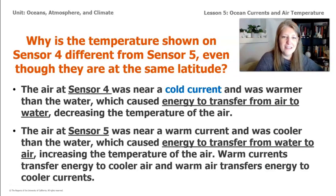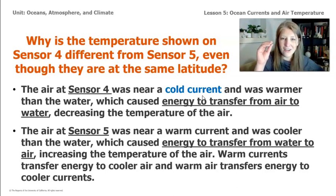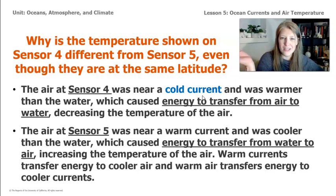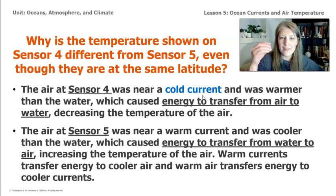In conclusion: because sensor 4 is near that cold current, energy transfers from the air to the water — the warmer air loses energy to the cold current, so the air temperature at that location is actually colder. Sensor 5 is near a warm ocean current, so as that warm current moves past, the water transfers energy to the air, making that location have a warmer air temperature than it would normally have.